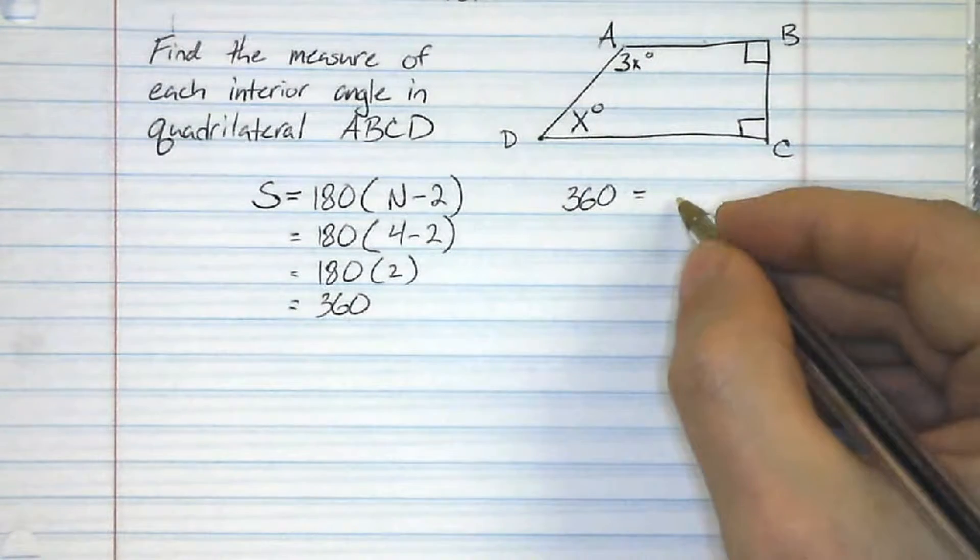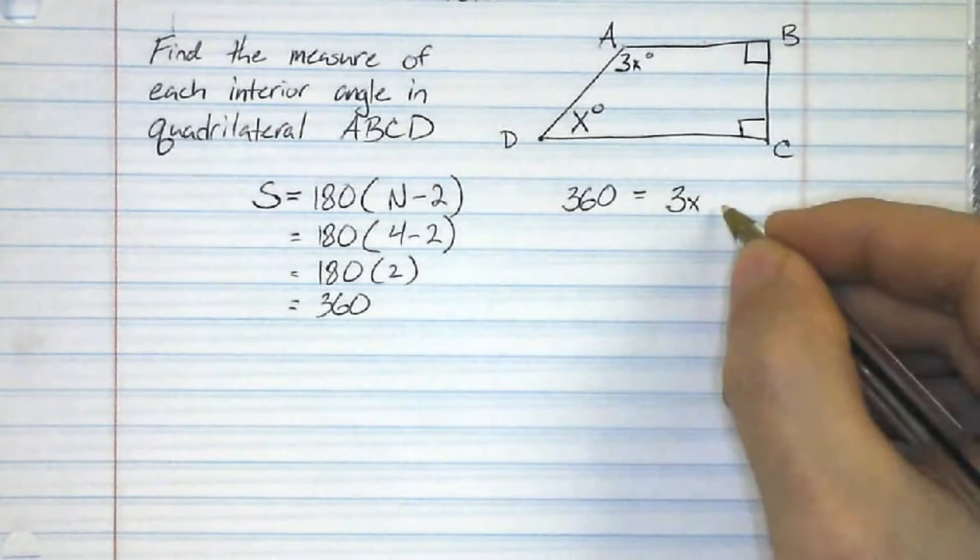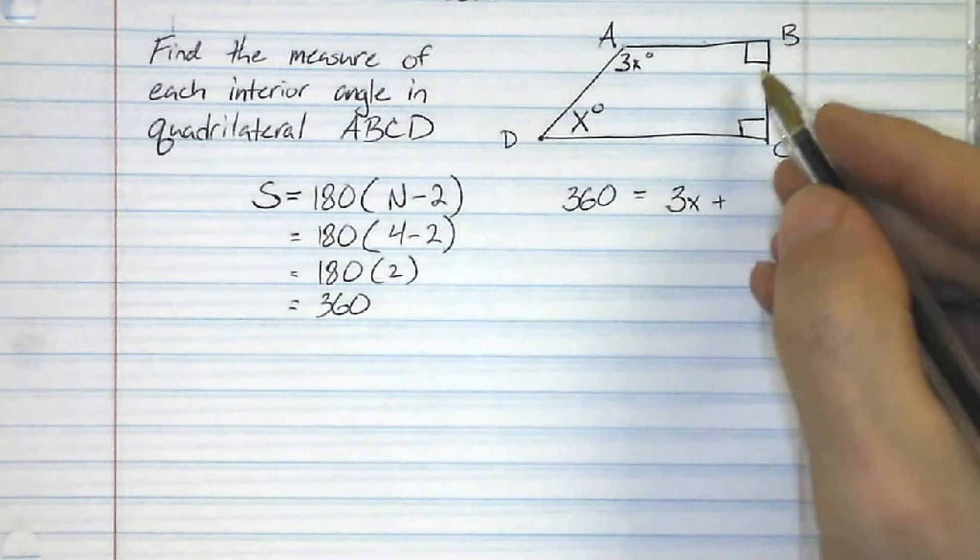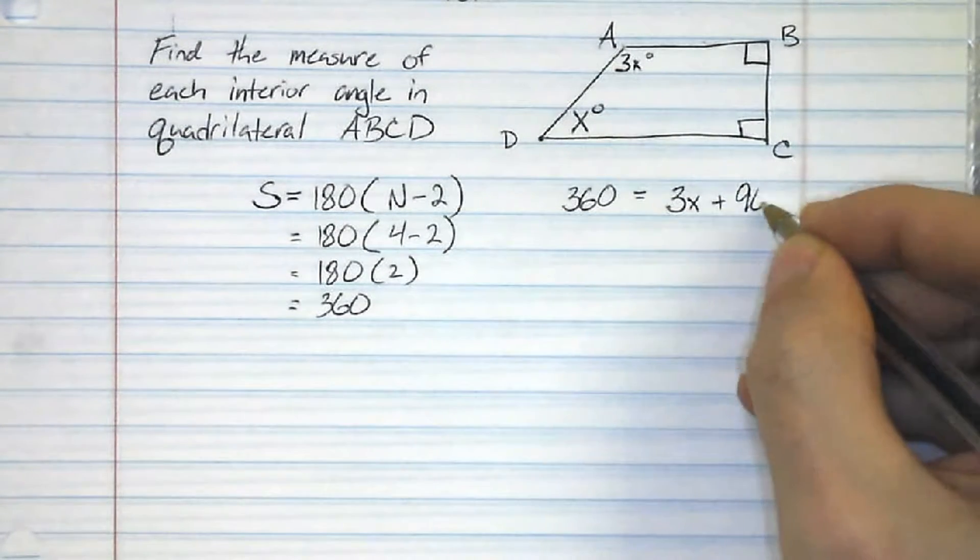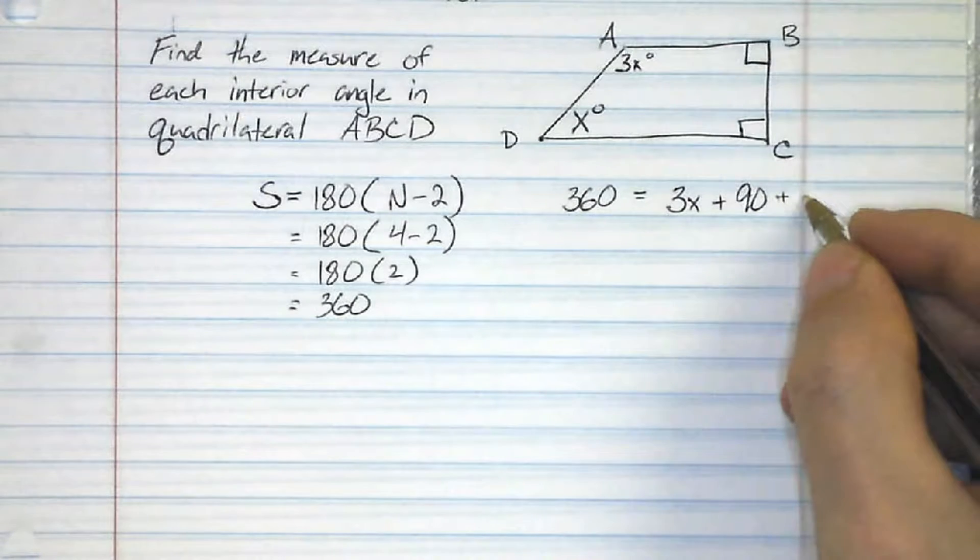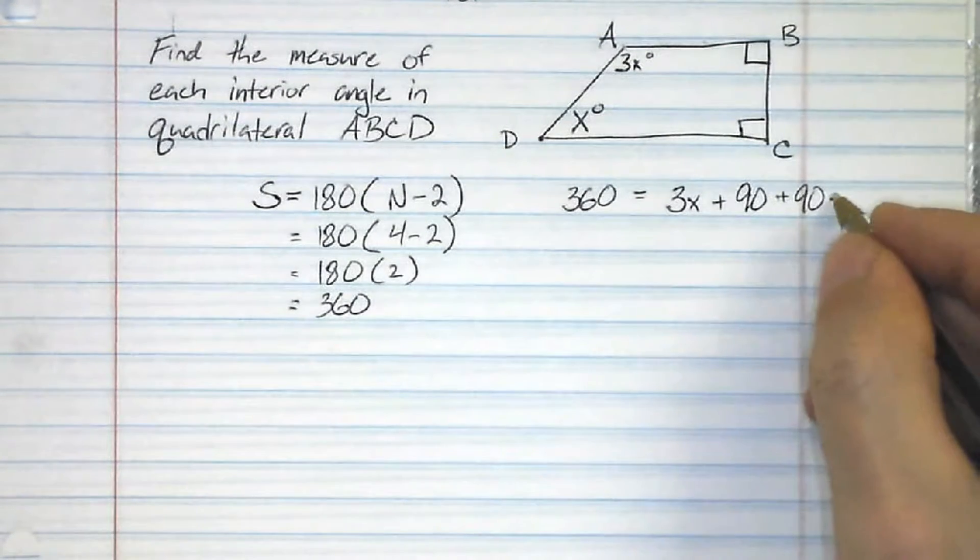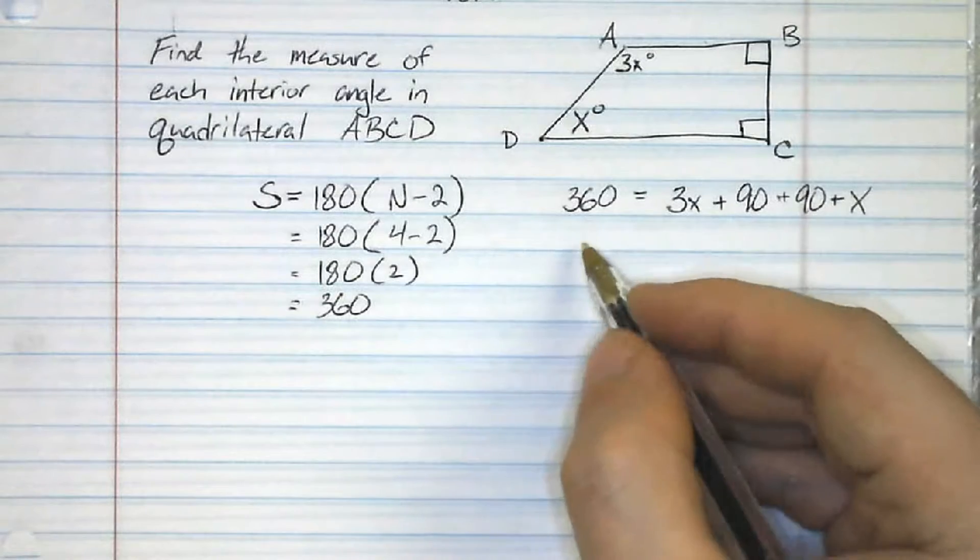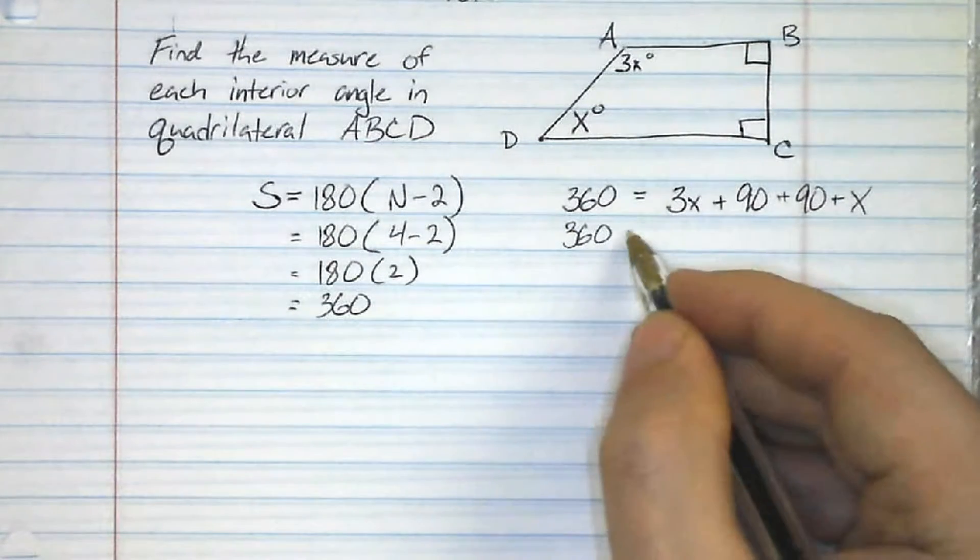So 360 degrees is going to be the measure of angle A, in this case 3x, plus the measure of angle B, remember that's 90 degrees, plus the measure of angle C, another 90 degrees, plus the measure of angle D, which is x degrees.